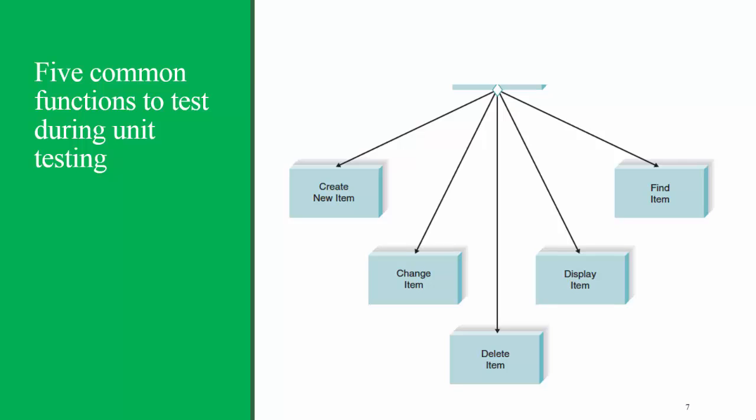There are five common functions that you can test during unit testing: creating, changing, deleting, displaying, and finding items. So if we were testing the assignment module that we programmed in Titanium, we would check if we can create a new assignment, change that assignment, delete the assignment, how the assignment displays to different users, and how we can find an assignment that we've created.